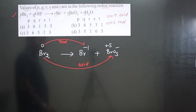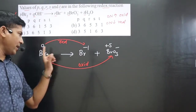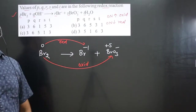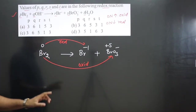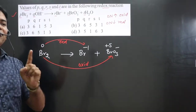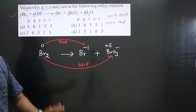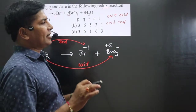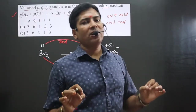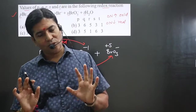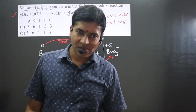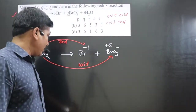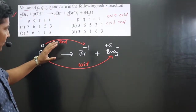Pay attention very carefully. In this reaction, the same molecule Br₂ is undergoing both oxidation as well as reduction. Hence we can say it is an example of a disproportionation redox reaction — very interesting. And in a disproportionation redox reaction, we cannot follow the short trick. We need to balance by the normal method.